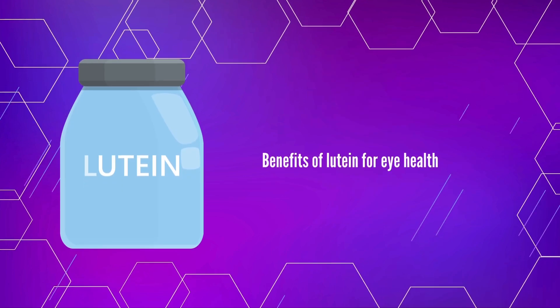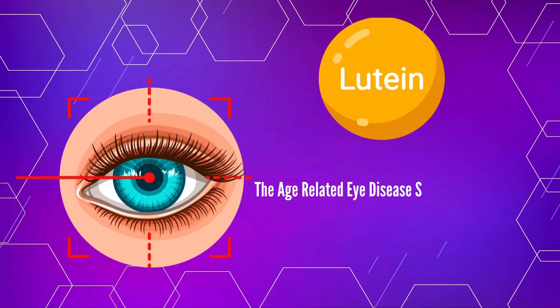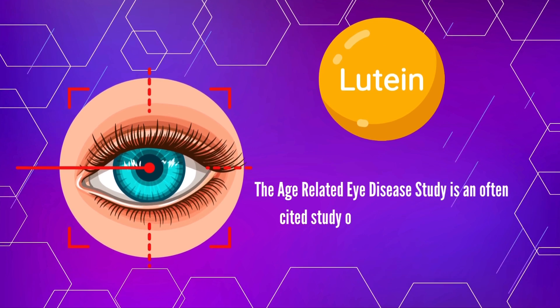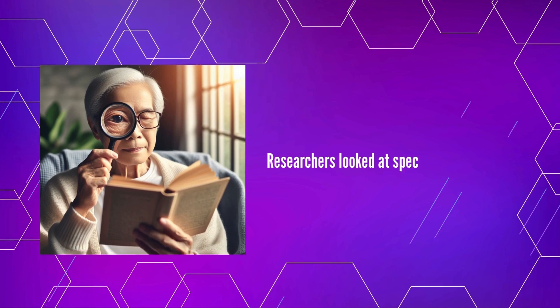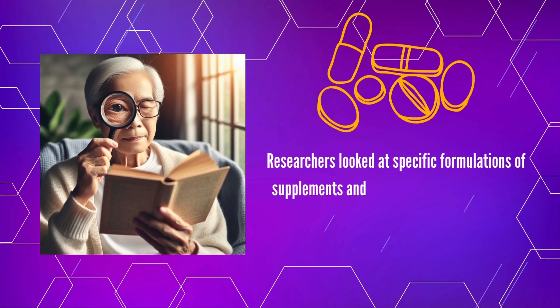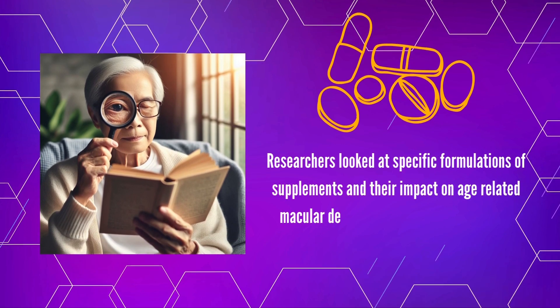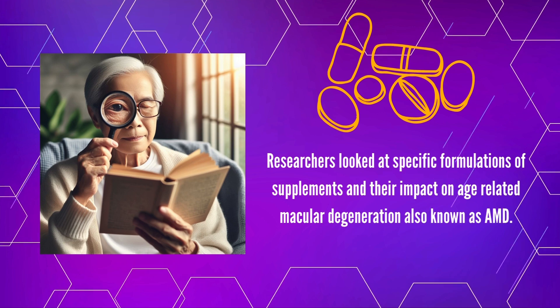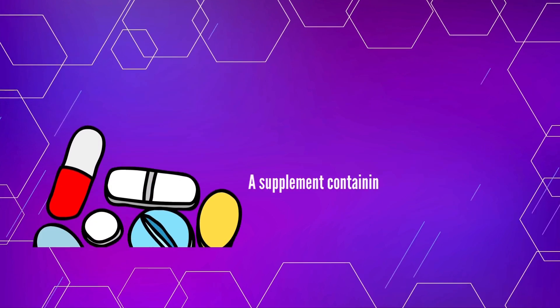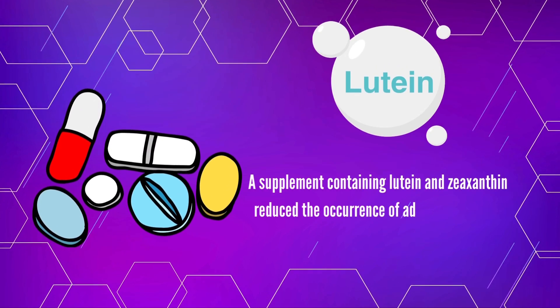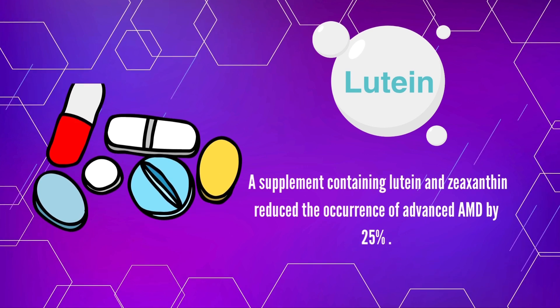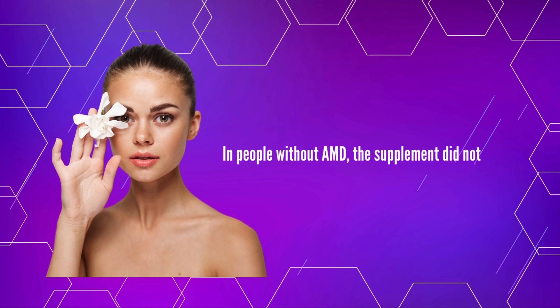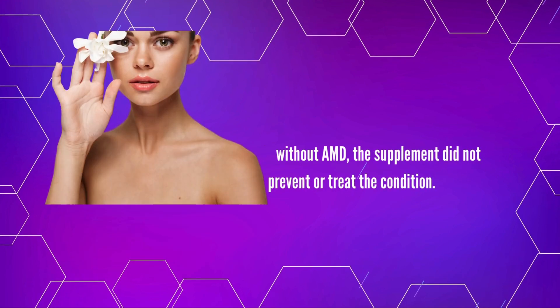Benefits of lutein for eye health. The age-related eye disease study is an often cited study on lutein and eye health. Researchers looked at specific formulations of supplements and their impact on age-related macular degeneration, also known as AMD. A supplement containing lutein and zeaxanthin reduced the occurrence of advanced AMD by 25%. In people without AMD, the supplement did not prevent or treat the condition.